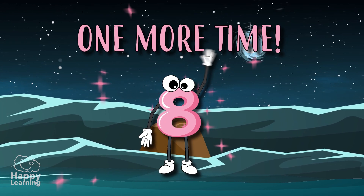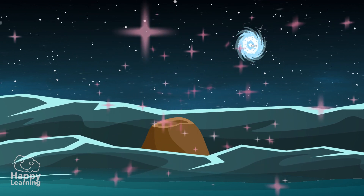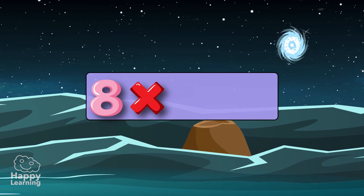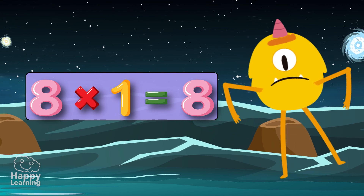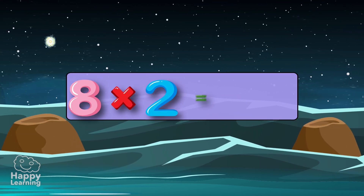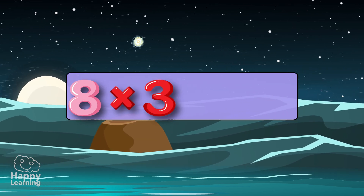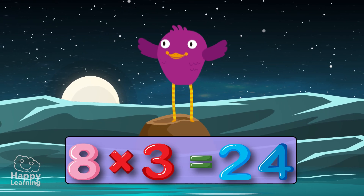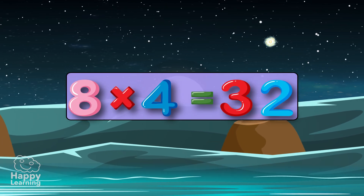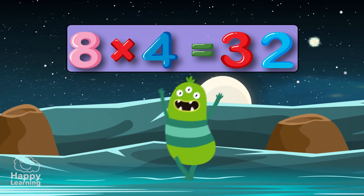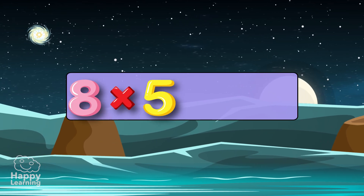One more time! Eight times one is eight. Eight times two is sixteen. Eight times three is twenty-four. Eight times four is thirty-two. Eight times five is forty.